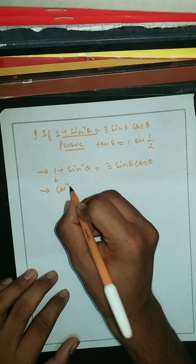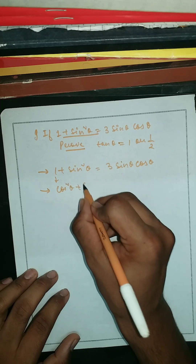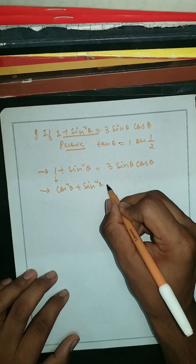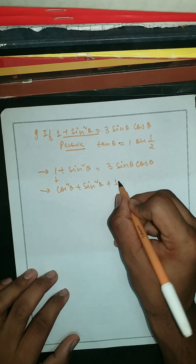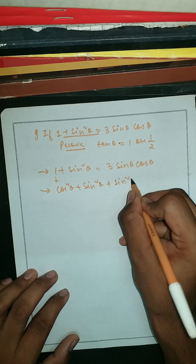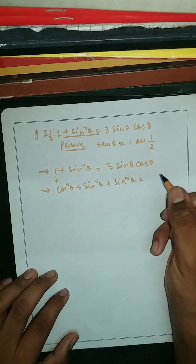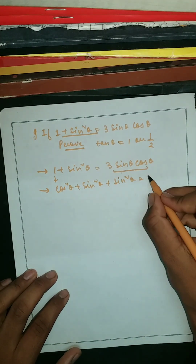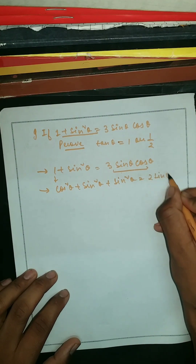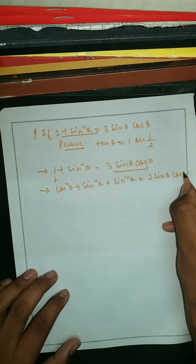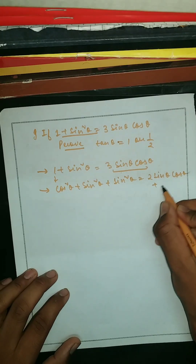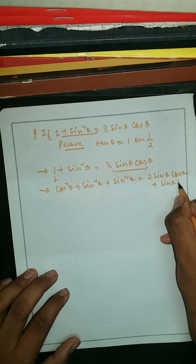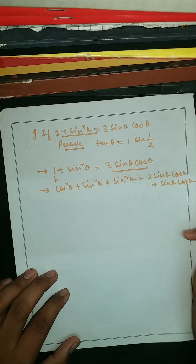Now I'm going to write this as cos²θ + sin²θ + sin²θ, equal to 2 sinθ cosθ + sinθ cosθ.